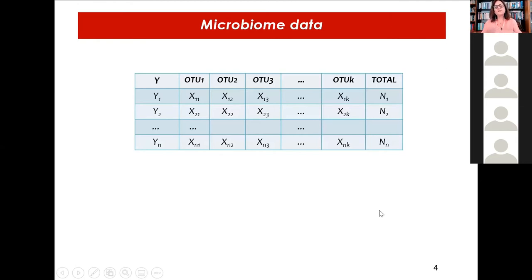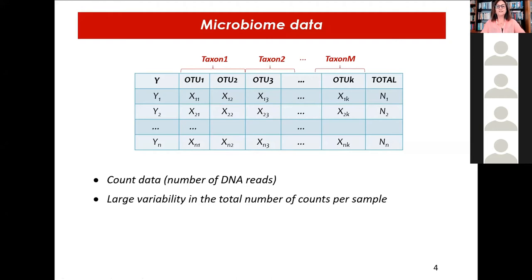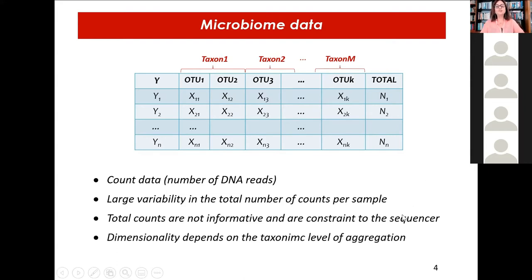After this process, we have for each sample, here the samples are the rows, a dependent variable that may be disease status, and we have the number of reads that we have observed for each OTU. But then sometimes we may want to analyze the data at different, higher taxonomic levels, and we agglomerate this data, but just summing the number of counts. So microbiome data is count data, the number of DNA reads for each variable. There is large variability in the total number of counts per sample. This total number of counts is not informative and is constrained by the technology used. And the dimensionality of the problem depends on the taxonomic level of aggregation that we are considering.